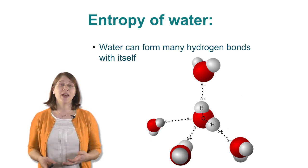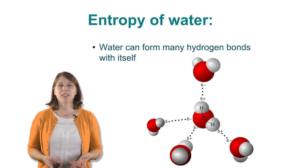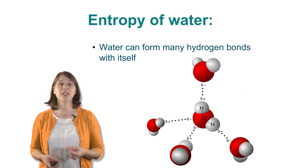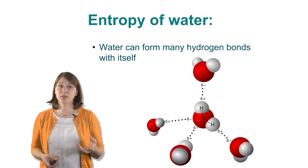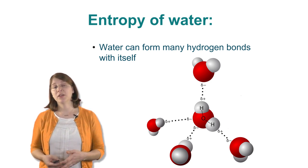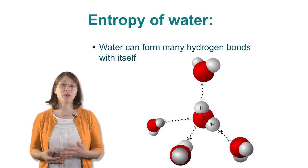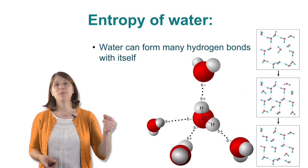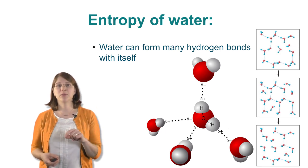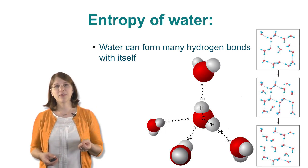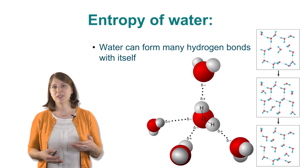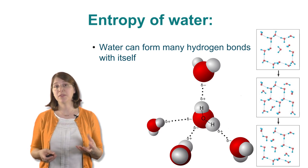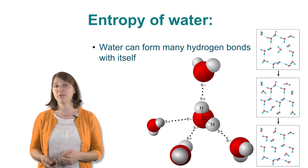Water also has an entropic contribution: water doesn't just hydrogen bond with a single water molecule — it hydrogen bonds with many water molecules. A water molecule can form about two to three hydrogen bonds, and each water molecule will change its hydrogen bonding partner every second or less. So we get a lot of possible conformations in bulk water phase where the hydrogen bonds are constantly changing their conformation.